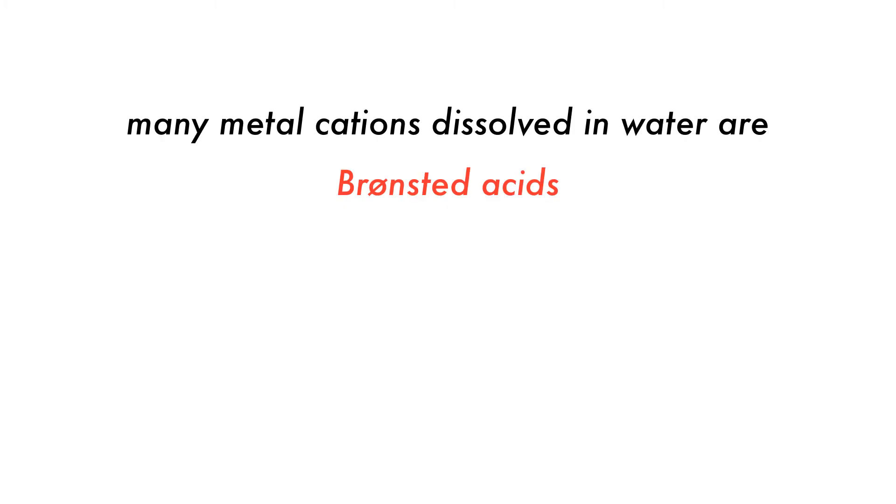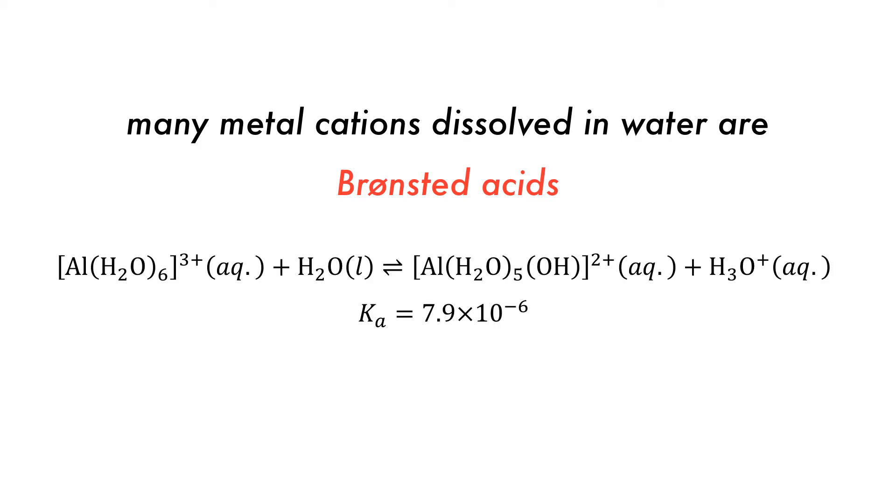Many metal cations that are dissolved in water are Brønsted acids, such as this Al3+ cation dissolved in water, which can liberate a hydronium ion making an acidic solution.